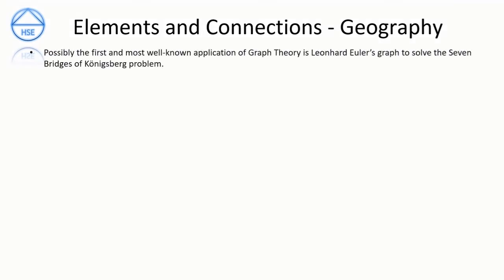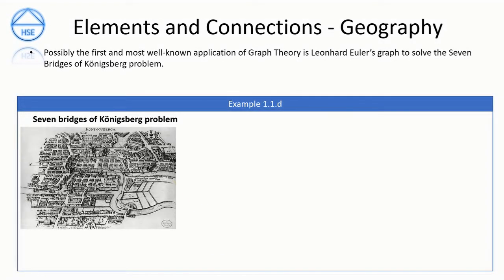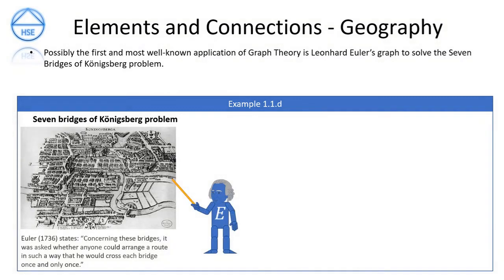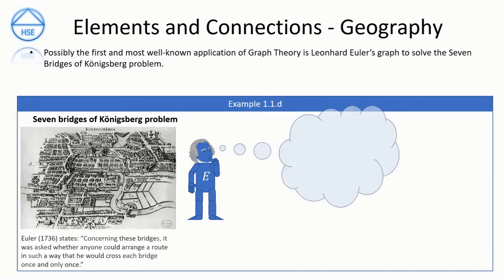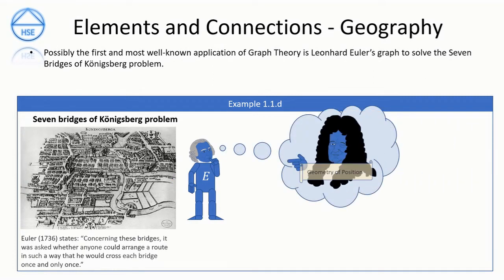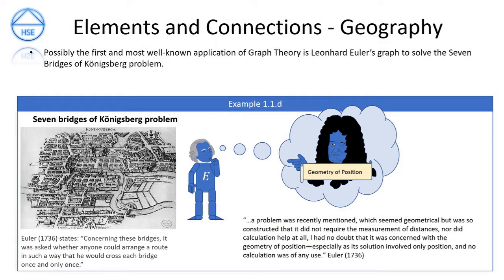Elements and connections — geography. Possibly the first and most well-known application of graph theory is Euler's use of graphs to solve the Seven Bridges of Königsberg problem, shown in Example 1-1-D. Euler is depicted as Mr. E pointing to the map of Königsberg, now modern-day Kaliningrad. Euler states that concerning these bridges, it was asked whether anyone could arrange a route crossing each bridge once and only once. Although combinatorics was well known at the time, set theory was not established until George Cantor laid its foundations between 1874 and 1884. Therefore most of Euler's work relates largely to the dynamics of number sequences — he used the tools he had available.